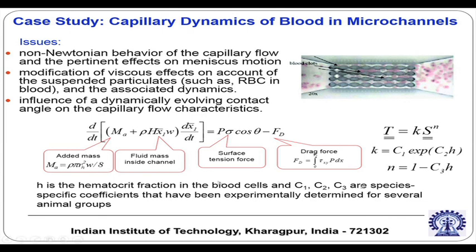As pointed out in the previous lecture, the T-star terms can be neglected under certain situations. So T equals k times s to the power n, where T and s are the stress and rate of deformation dyadics. Now k and n are again dependent on several parameters — one of the important parameters is called the hematocrit fraction, which is essentially the volume fraction of the red blood cells.